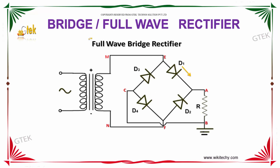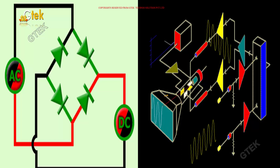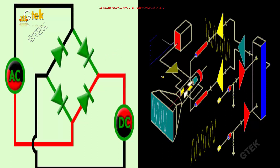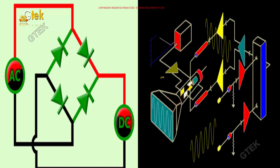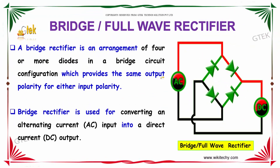Full wave rectifier, or bridge rectifier — let's see how it works. Here is a typical example of a full wave rectifier. A bridge rectifier is an arrangement of four or more diodes in a bridge circuit configuration which provides the same output polarity for either input polarity. A bridge rectifier is used for converting an alternating AC current into a direct current.